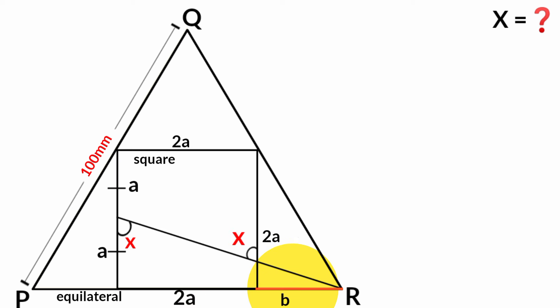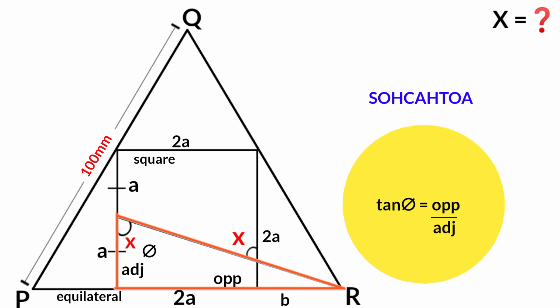Now if you assume the length of this side to be b, from this triangle you can use SOH CAH TOA. Taking this angle as theta, there is the opposite and there is the adjacent. From here, tan theta equals opposite over adjacent.